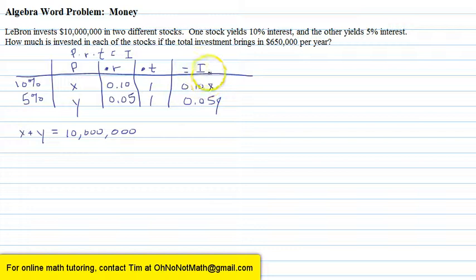For the second equation, we're going to look at the interest. We're told that the total amount of interest brought in by both stocks combined is $650,000. So the amount that's brought in by the 10% stock is 0.10X, plus the amount that's brought in by the 5% stock is 0.05Y. Both of those two added together equals $650,000. So that's our second equation.